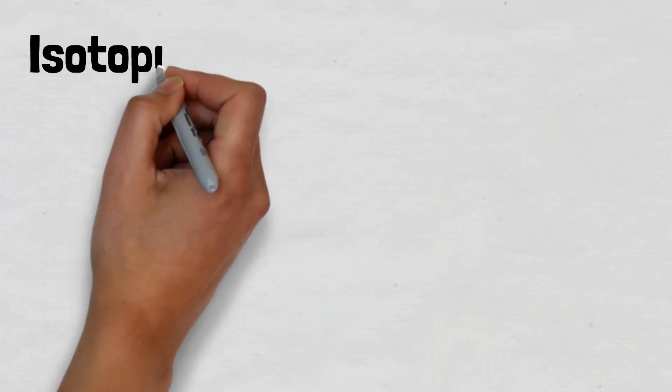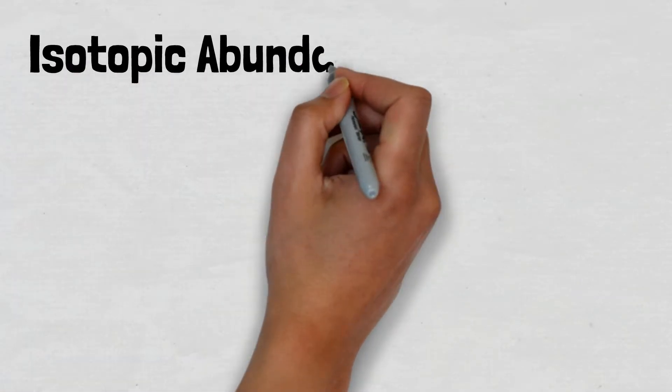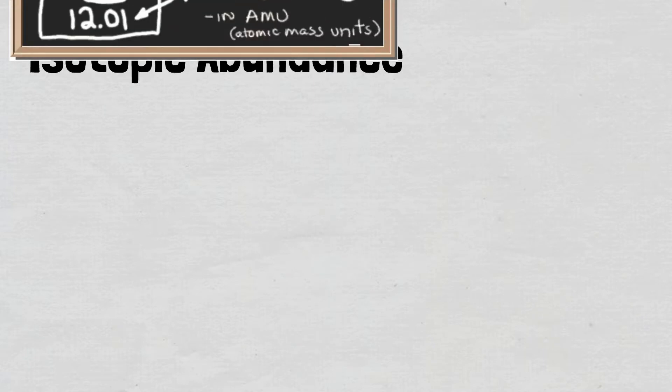In this video, I'll explain the concept of isotopic abundance and how to calculate the average mass of an element.